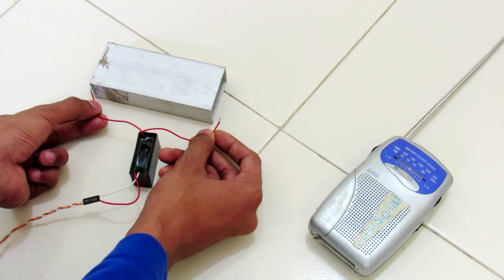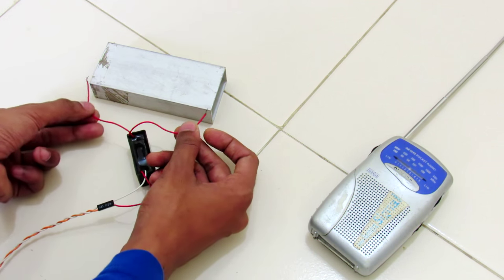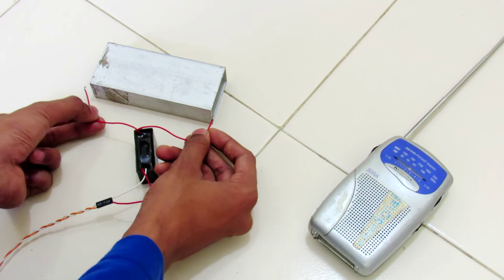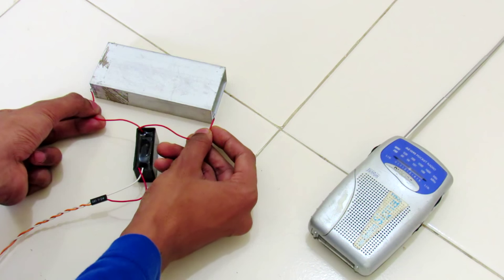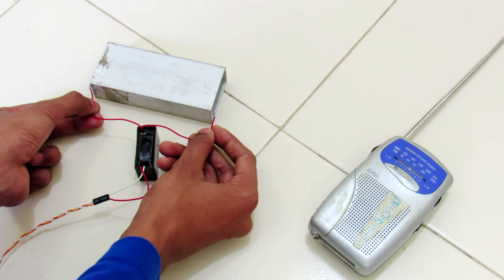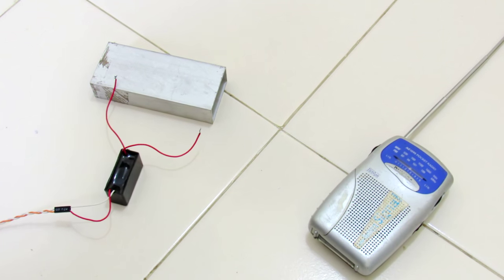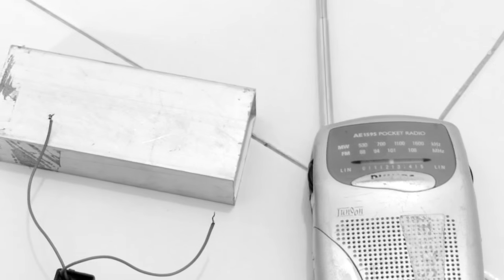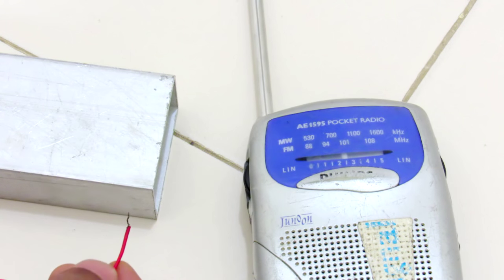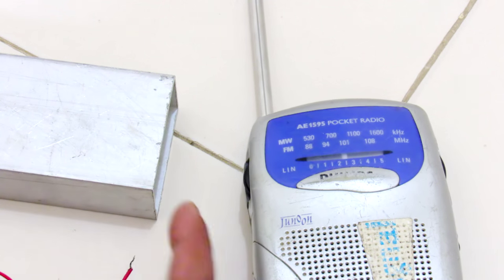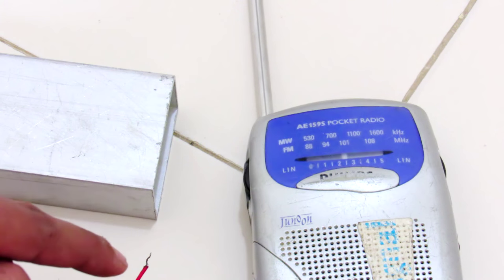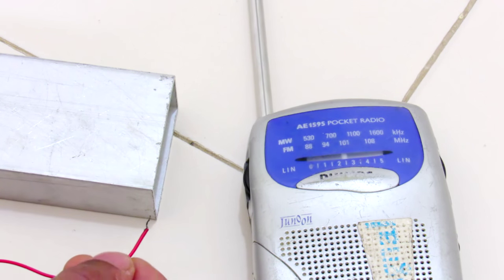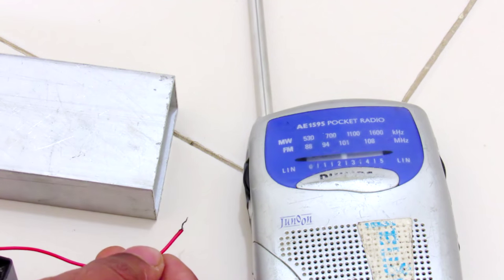I'm going to connect it at both ends directly. You can see the change in the sound of the FM. Let me get you close so you can see the changes quite neatly. Okay guys, we are close up now. Watch the distance between this aluminum plate and this wire and the sound output of the FM.